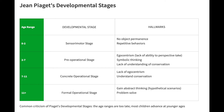Our last stage is the formal operational stage. This stage is marked by abstract reasoning and problem solving. One good example is being able to predict what could have hypothetically happened in a story if a character had done something differently.